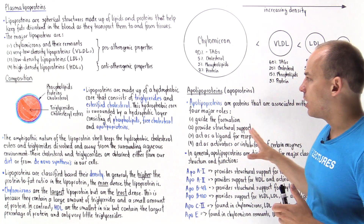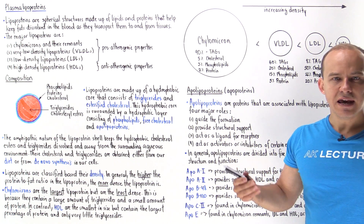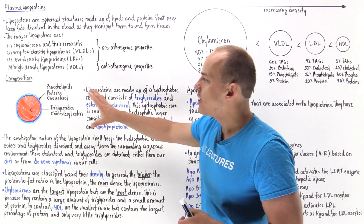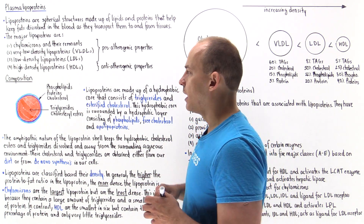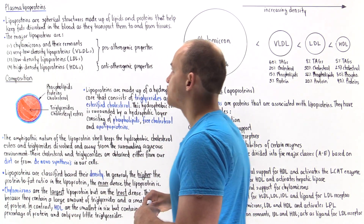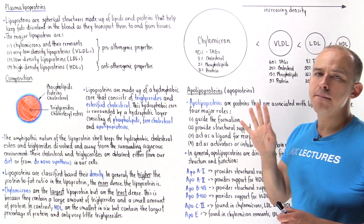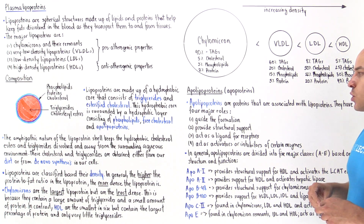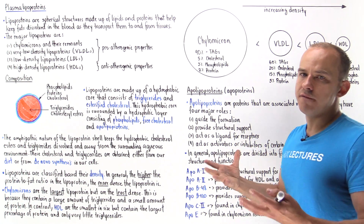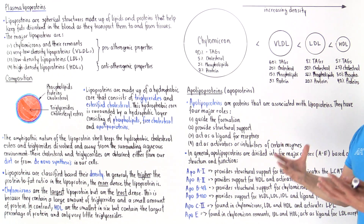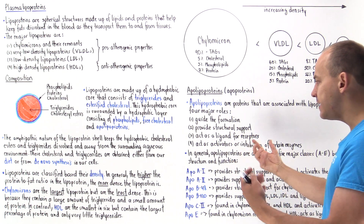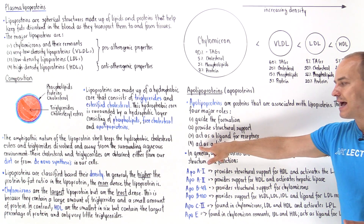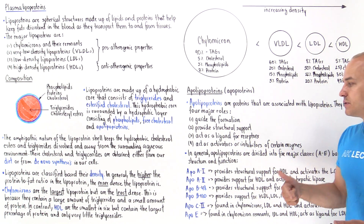Apolipoproteins, also known as apoproteins, are simply the proteins that help dissolve triglycerides and cholesterol in the blood — they help make up the shell of the lipoprotein. They have four major roles depending on the type: some guide the formation of the lipoprotein, some provide structural support and give the structure integrity, others act as ligands for receptors such as LDL receptors, and some can activate or even inhibit certain types of enzymes.